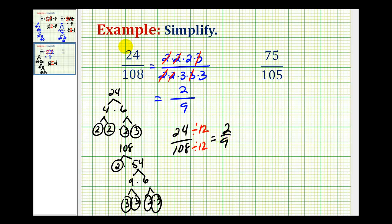Let's take a look at one more example. We want to simplify 75 over 105. So again, we'll start by writing out the prime factorization of 75 and 105.